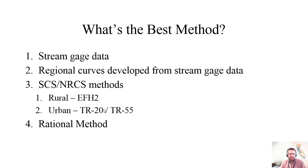Next best is hydrologic modeling. The SCS — formerly called SCS, now called NRCS — has two methods. For rural sites, you can use EFH2. For urban sites, you can use TR-20, which is sometimes called TR-55, which is the pen-and-paper version of the TR-20 method. Finally, the least reliable is the rational method, although it's still quite commonly used for catch basin and closed drainage network design, and for that it is fine.